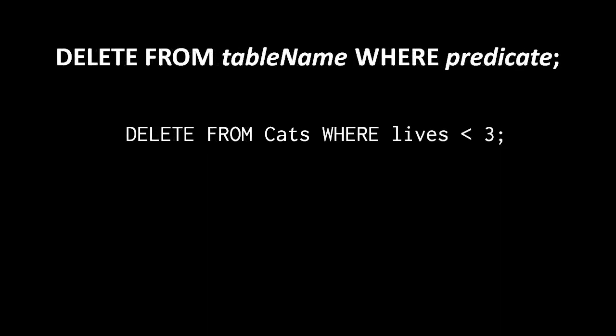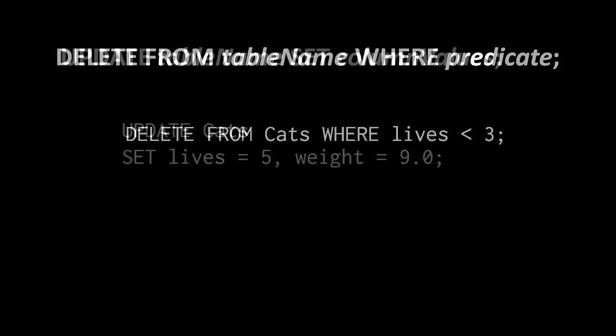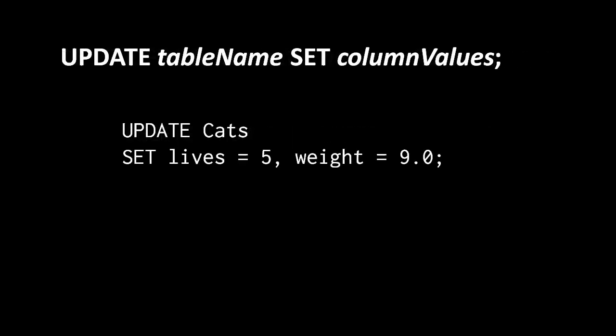To remove rows from a table we use the delete statement: write delete from the name of the table, the reserved word where, and then a boolean predicate. For example, we're deleting from the cats table every row in which the lives value is less than three.